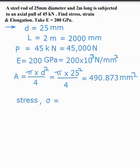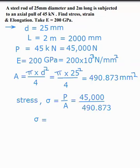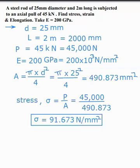Stress is denoted by sigma. Sigma is equal to P by A. So P is 45,000 N. Then cross sectional area is 490.873. So we get stress is equal to 91.673 N per mm square. Then next strain.